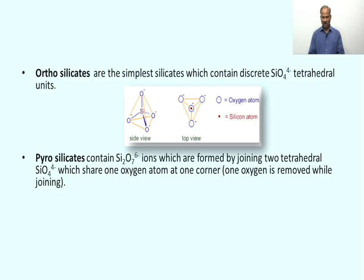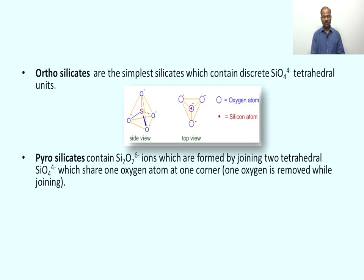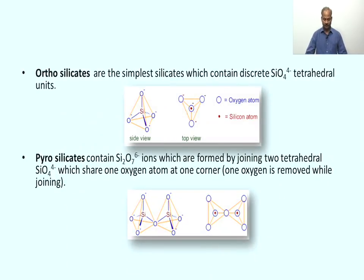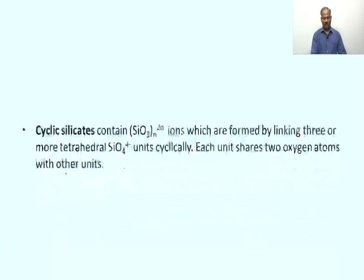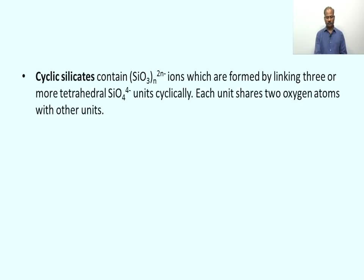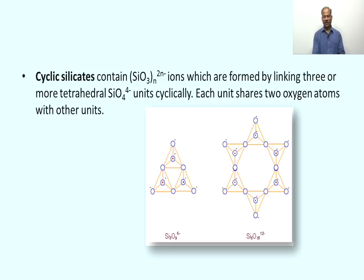The second category is pyrosilicate. Pyrosilicates contain [Si₂O₇]⁶⁻ ions, which are formed by joining two tetrahedral units with one shared oxygen atom. So one oxygen is shared between two units. The third category is cyclic silicates, which contain [SiO₃]ₙ²ⁿ⁻ as a repeating unit. In cyclic silicates, two oxygen atoms of every unit are shared with neighboring units. There are three-membered and six-membered ring units.